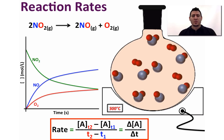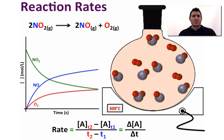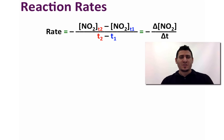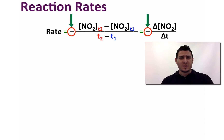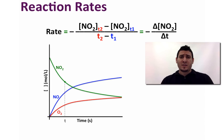Note that the change in concentration could be negative or positive; however, the reaction rate has to always be a positive quantity. Since the concentration of reactants always decreases, the rate expression involving a reactant will include a negative sign to get a positive quantity.